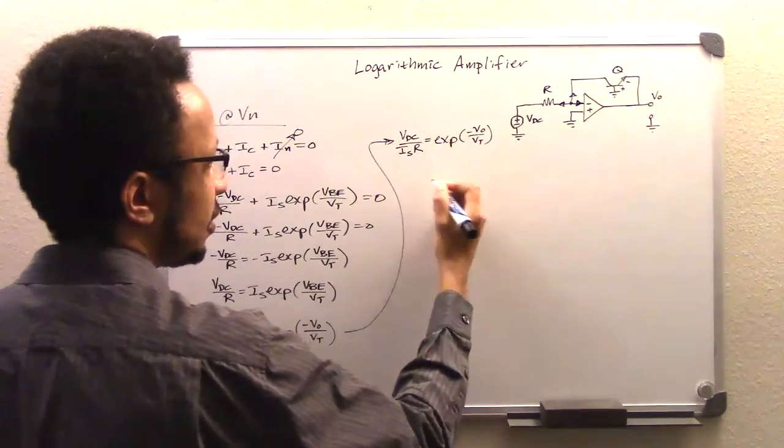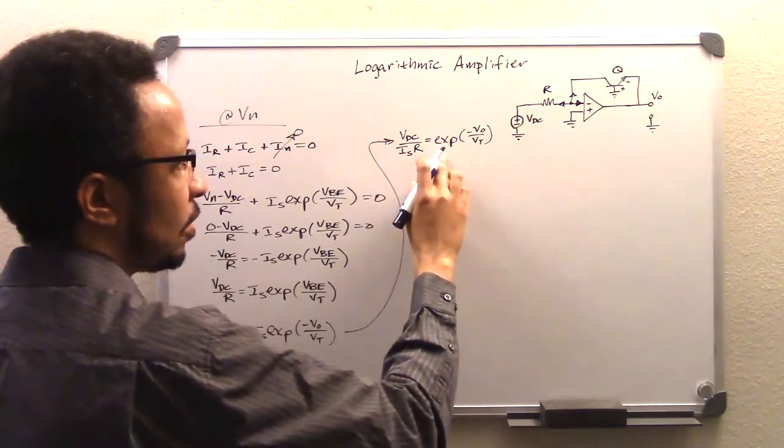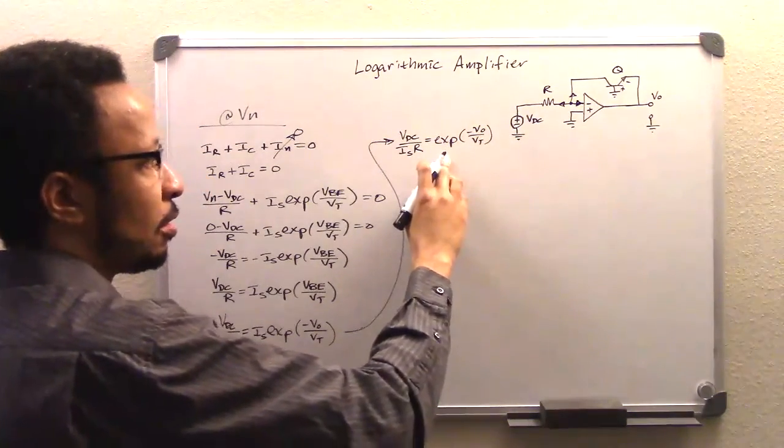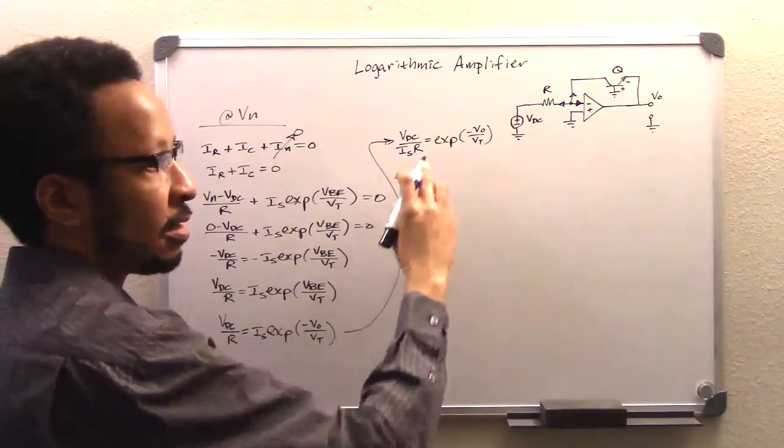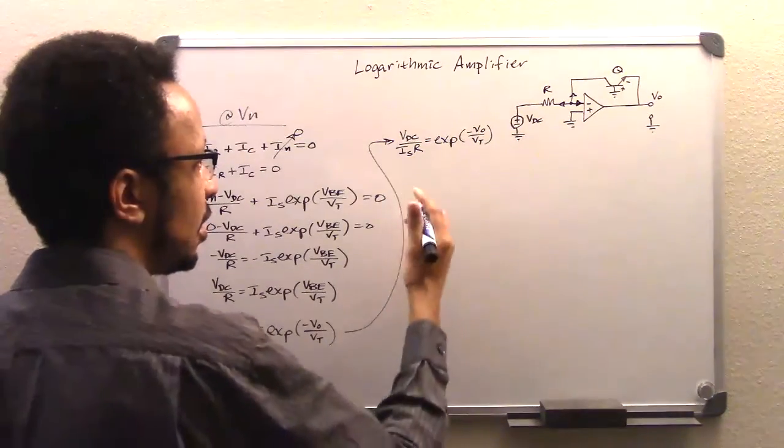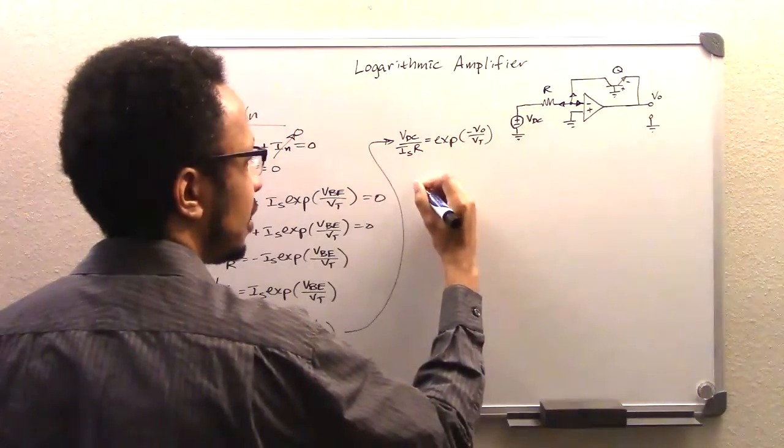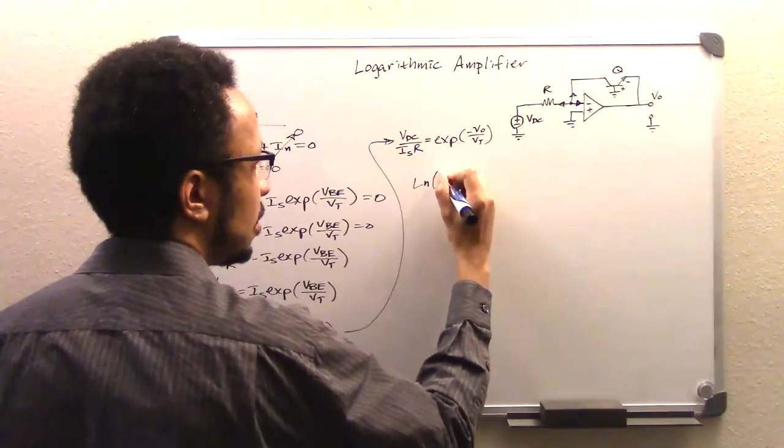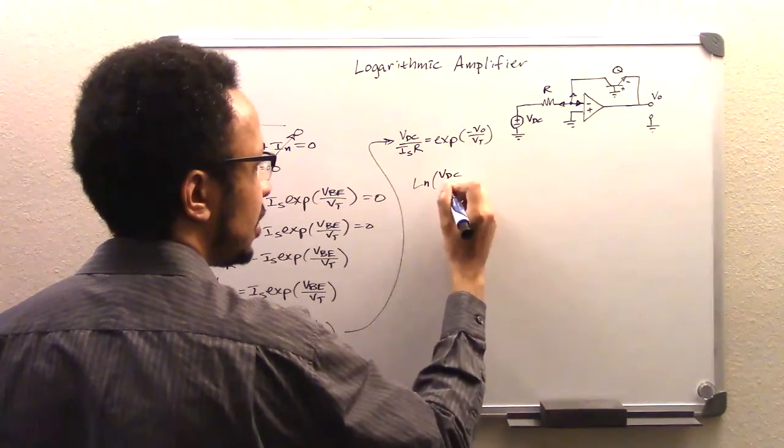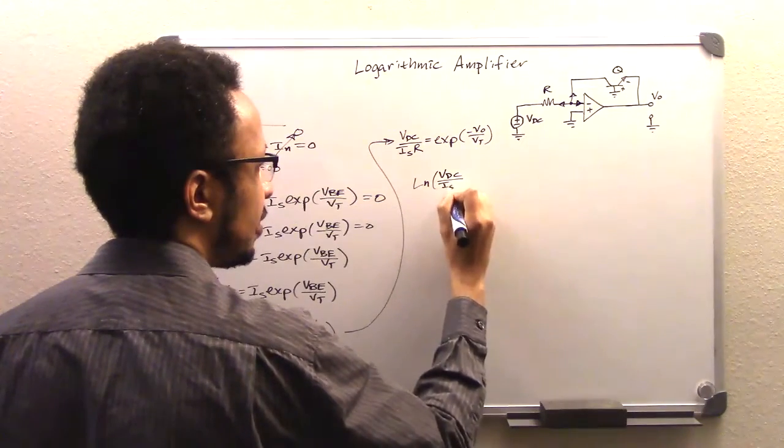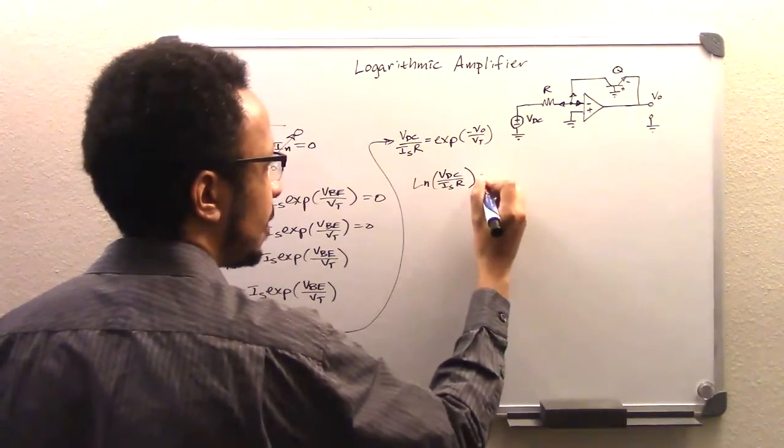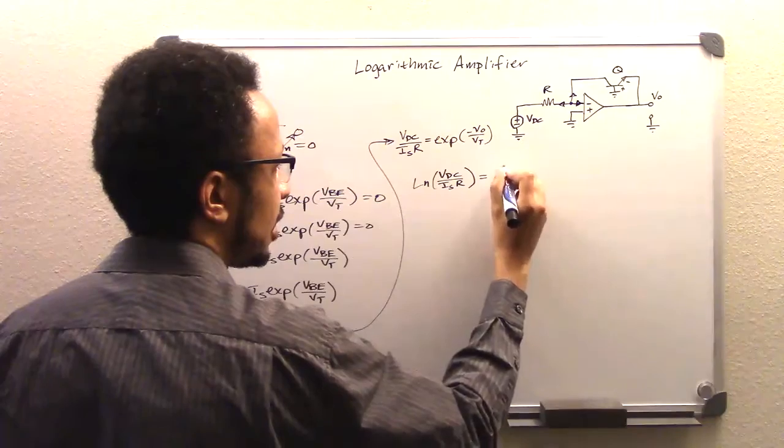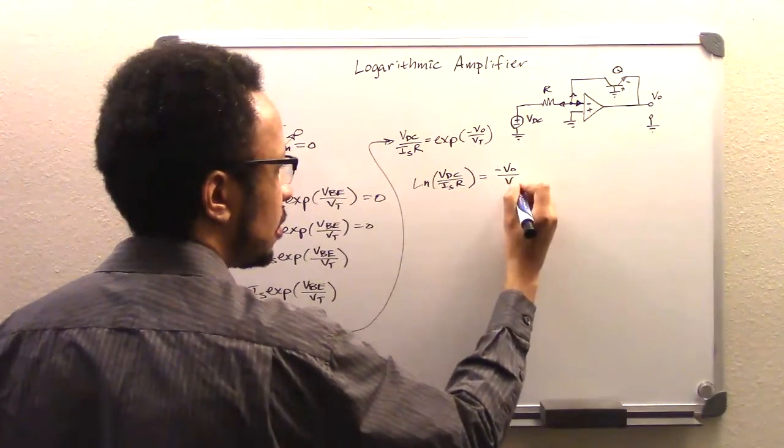Next, we're going to get rid of the exponential over here by taking the natural logarithm of both sides. And then that's going to give us natural log VDC over IS times R equals negative Vout over VT.